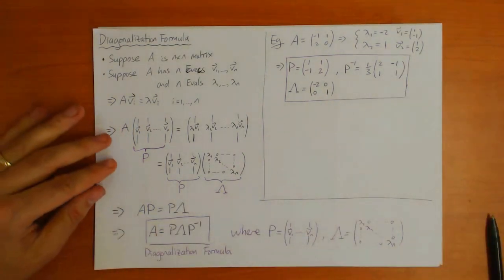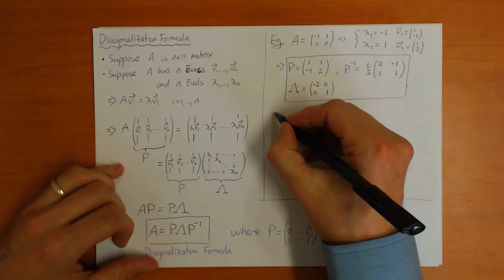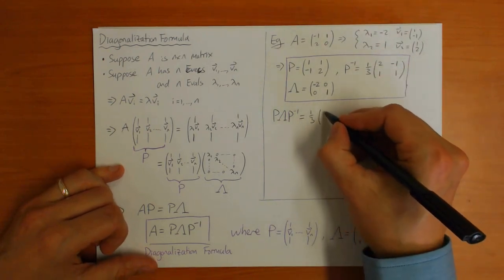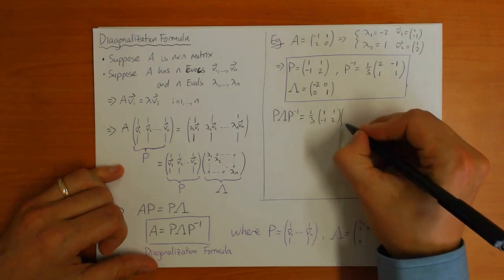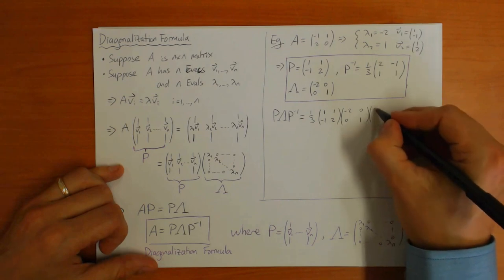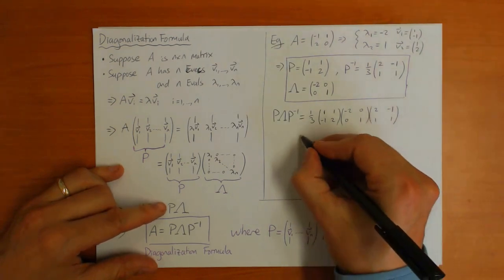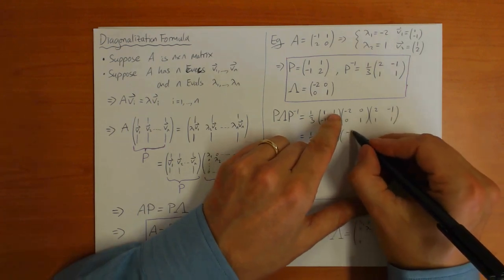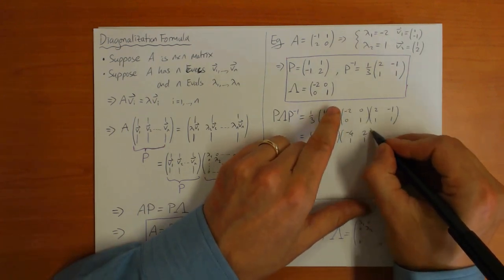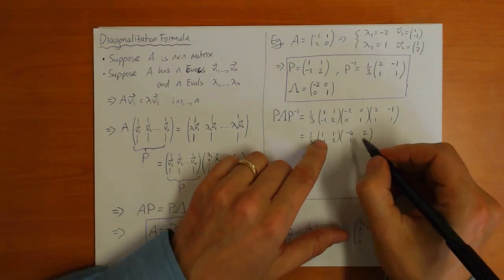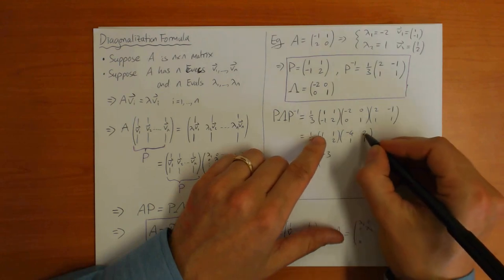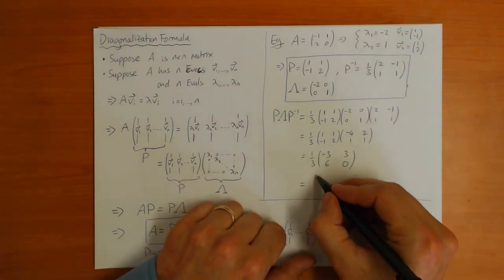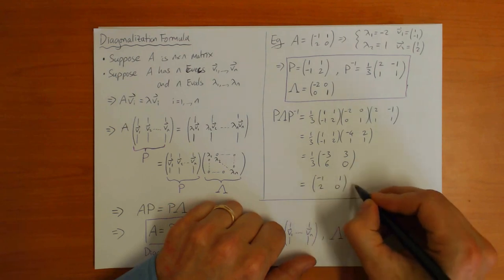Let's check the formula is correct by computing P lambda P inverse. Taking 1/3 as a common factor, we multiply P times lambda to get the matrix with entries (-4, 2, 1, 1), scaled by 1/3. Multiplying through with P inverse gives entries: minus 4 plus 1 is minus 3, 2 plus 1 is 3, 4 plus 2 is 6, minus 2 plus 2 is 0 — scaled by 1/3 — yielding the matrix (-1, 1, 2, 0), which is indeed equal to A.